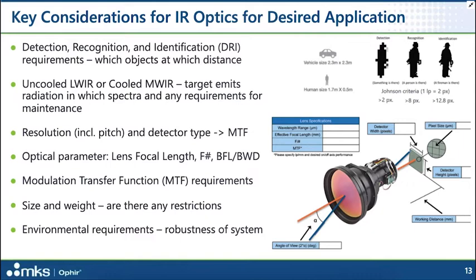When thinking about your application, you always have to consider which object at which distance you want to detect. This gives you the DRI — detection, recognition, and identification requirement — which defines the focal length you need. The next question is in which spectral band the object emits light, and whether you have any maintenance requirements. These factors determine whether you need a cooled MWIR or uncooled LWIR detector system. Then you must consider detector resolution and pixel pitch, which defines your MTF. Also consider size and weight restrictions and environmental robustness requirements.